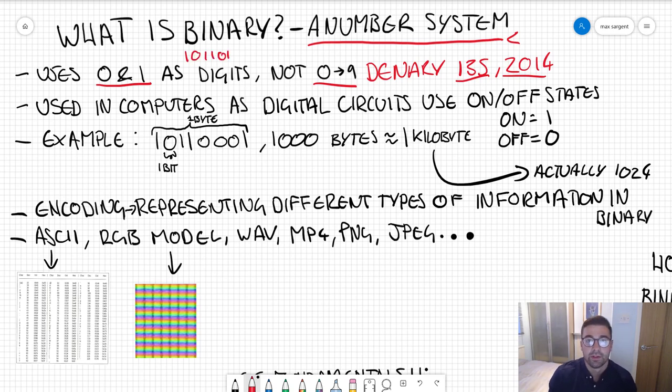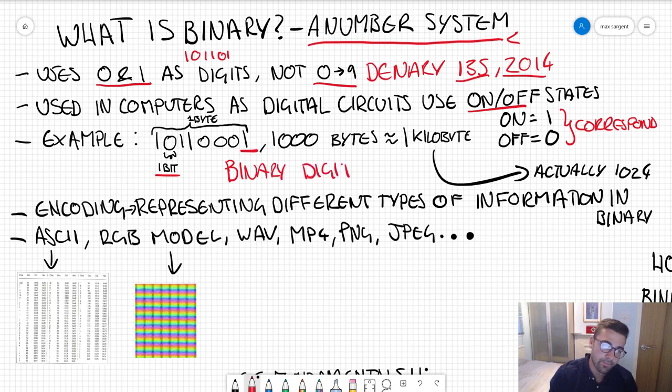Binary is used in computers as digital circuits use on/off states. These on/off states correspond to the zero and one of binary. A binary number is made up of ones and zeros. A single one or a zero is what we call a bit, one bit. The word bit comes from binary digit.